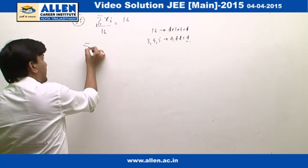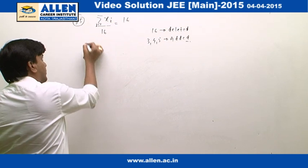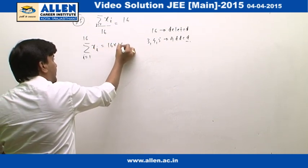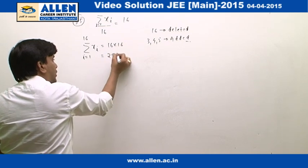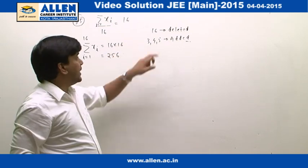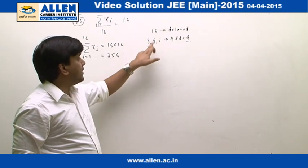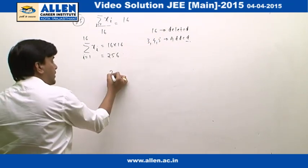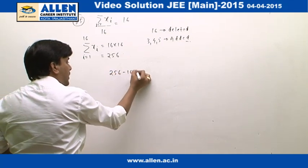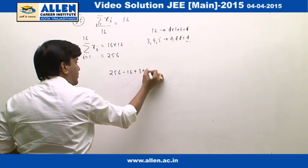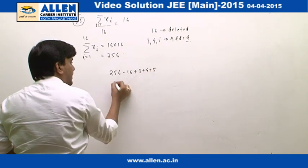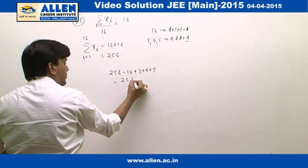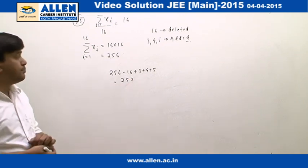Now, further in the question it is given the data of 16 is deleted and these three data are added. So this sum will change as 256 minus 16 plus 3 plus 4 plus 5, and this is going to be 252.